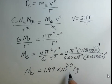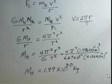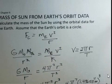1.99 times 10 to the 30th kilograms. A respectable number, a large number compared to other objects in our solar system, not especially large compared to other stars. But there you have it. That's how you calculate the mass of the Sun from the Earth orbit data.